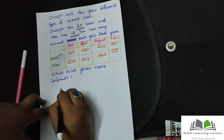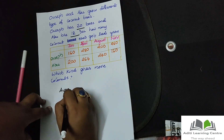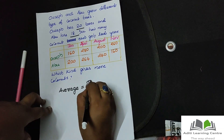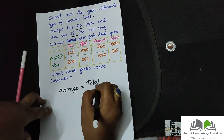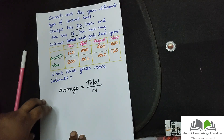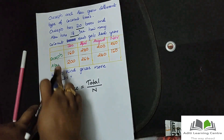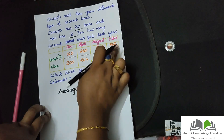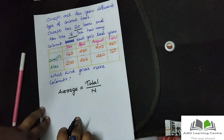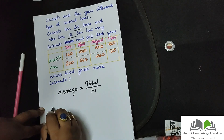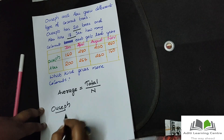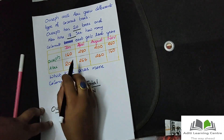Average is equal to total divided by number. This is the number. The average is equal to total divided by number. We have total divided by number.